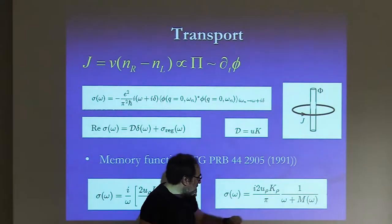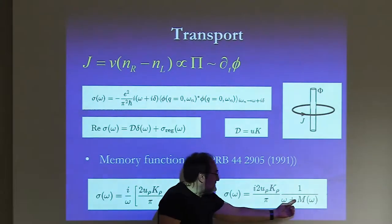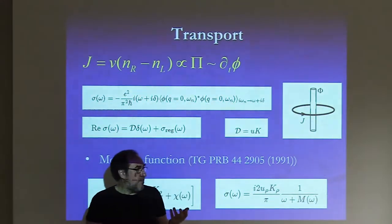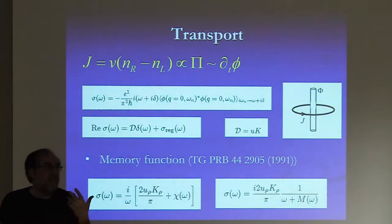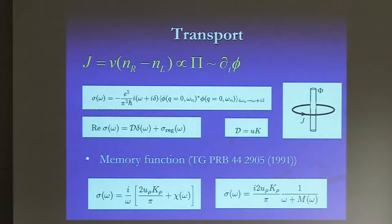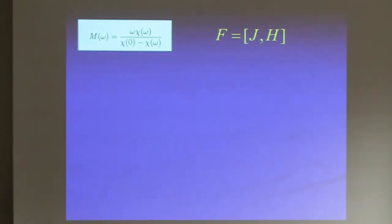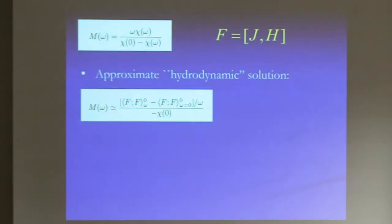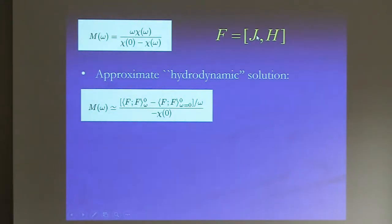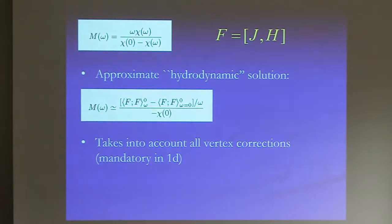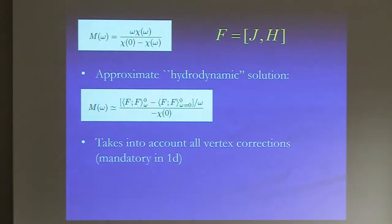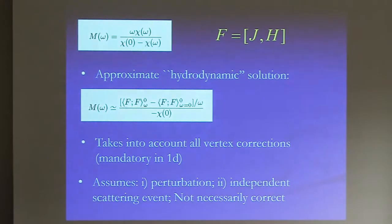The memory function method is not so useful in high dimensions compared to other methods, but it is remarkably useful in one dimension. It is a kind of hydrodynamic approximation that allows you to rewrite the conductivity as a function of this memory function. If it were just i/tau, tau would be the lifetime and you'd get the standard Drude formula. In 1D, the memory function m(omega) is more complicated, giving more complex behavior. It is connected to a correlation of the commutator of the current with the Hamiltonian, and it incorporates all vertex corrections — which in 1D are absolutely crucial.